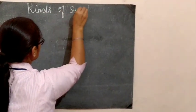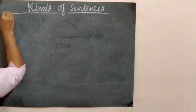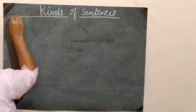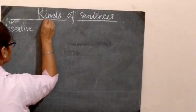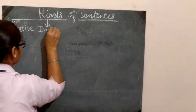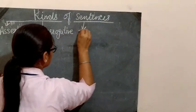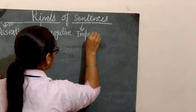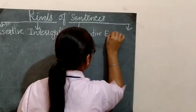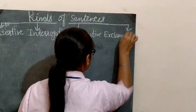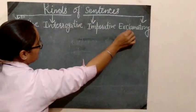Kinds of sentences. Basically, sentences are divided into four categories: assertive, interrogative, imperative, and exclamatory.